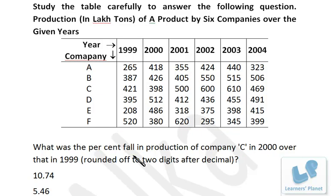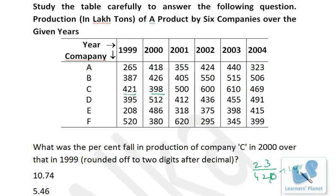Next question: what was the percentage fall in production of company C in 2000 over that in 1999? The fall is 23 units over a base of 421. So (23/421) × 100 = 230/421 ≈ 5.46. Since 42 × 5 = 210 and we need a bit more, it's slightly less than 5.5, confirming approximately 5.46 among the options.